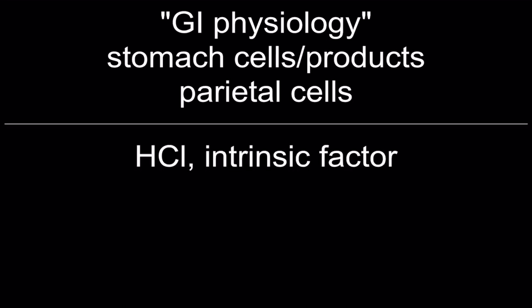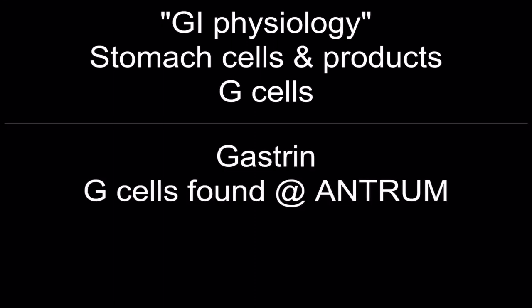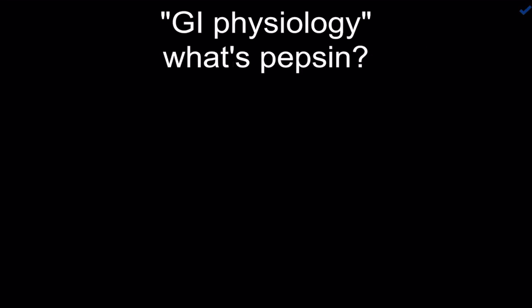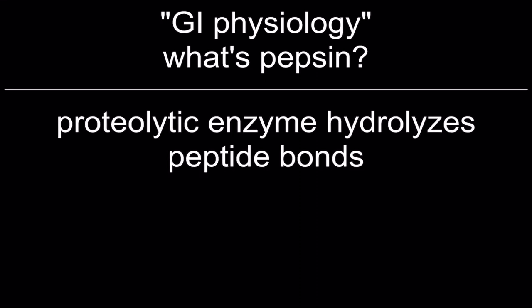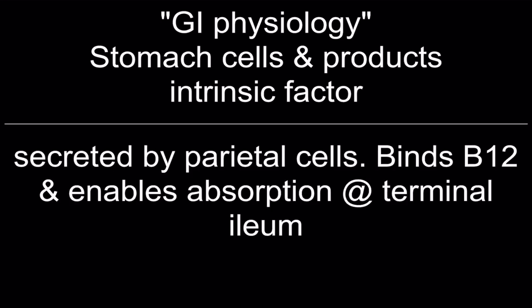Stomach cell products — Parietal cells: hydrochloric acid and intrinsic factor. Chief cells: pepsinogen. G-cells: gastrin — G-cells are found at the antrum. Mucus neck cells: bicarb and mucus. Pepsin is a proteolytic enzyme that hydrolyzes peptide bonds. Intrinsic factor is secreted by parietal cells; it binds B12 and enables absorption at the terminal ileum.